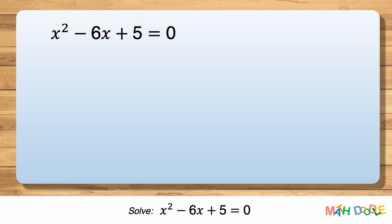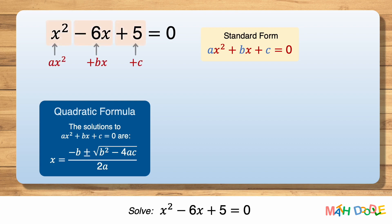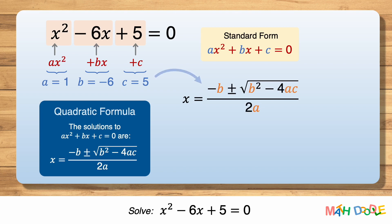To solve this equation using the quadratic formula, let's first compare the equation with the standard form and find the numbers that correspond to A, B, and C. As you can see, A is 1, B is minus 6, and C is 5. Now, let's substitute these for A, B, and C in the quadratic formula.